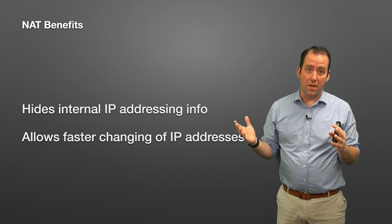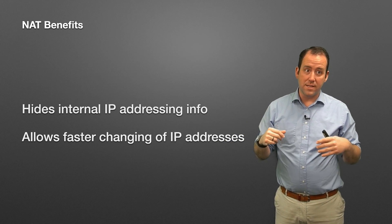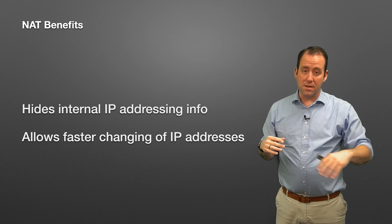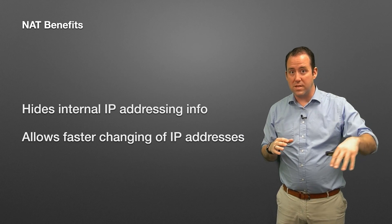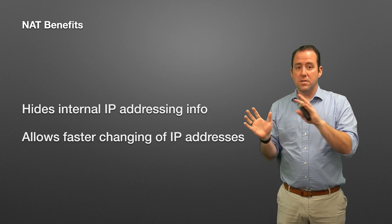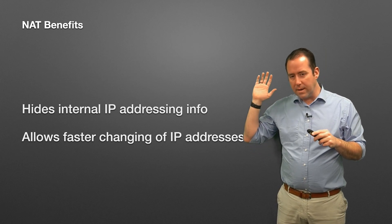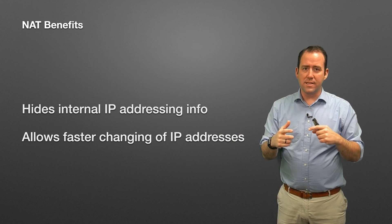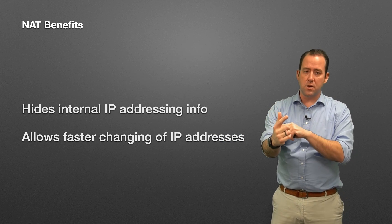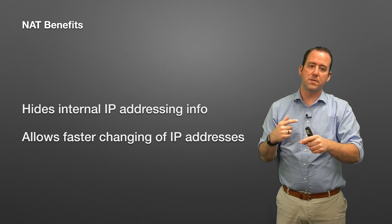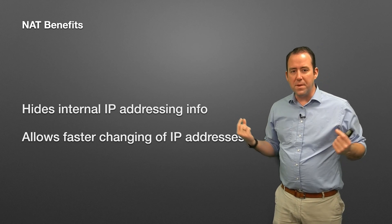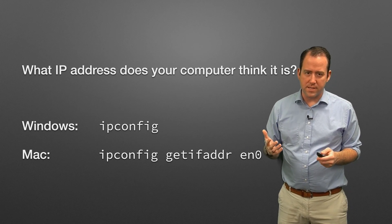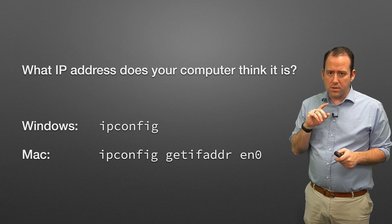NAT also allows faster changing of IP addresses. Amazon uses it all the time - when you shut down an instance, it takes away that public IP address and allocates it to somebody else, unless you pay for an elastic IP. It allows that switch to happen instantly: you can switch the public IP address while keeping the internal private IP address exactly the same.